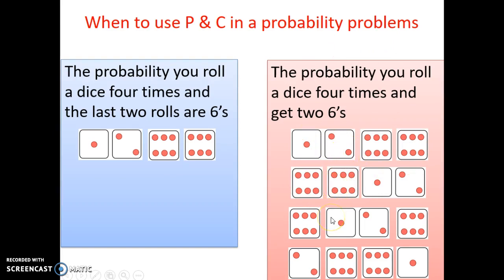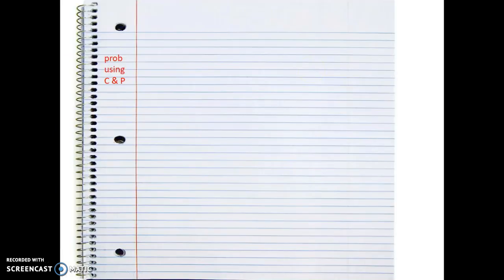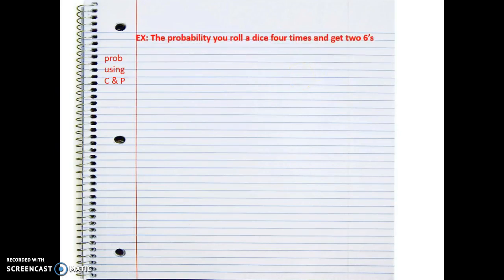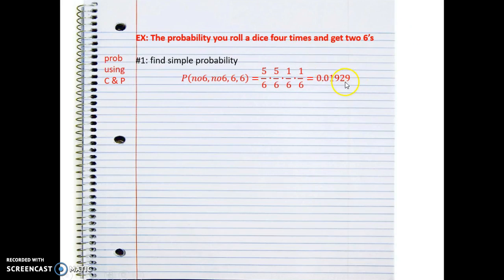There are even more combinations than that, so we have a lot of options for what could happen. This means we need to bring in permutations and combinations. Let's look at this problem more carefully. Step one - find the simple probability. That's the step I hope everyone can do. The simple probability would be: no six, no six, then a six, and a six. We figure that out and get this number. You could turn it into a percent and you're done - you've done the basics of what you need for this class.